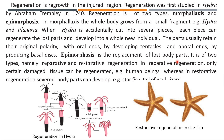Epimorphosis is the replacement of lost body parts, and it is of two types: reparative and restorative. In reparative regeneration, only certain damaged tissues can be regenerated — for example in humans, wound healing of skin, and regrowth of nails and hair. In restorative regeneration, severely damaged or lost body parts can develop — for example in starfish, lost arms will regrow after a few weeks. When the whole body grows from a small fragment it is called morpholaxis; replacement of lost body parts is called epimorphosis.